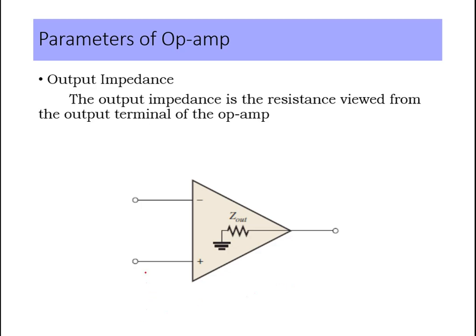Next is output impedance. Output impedance is the resistance available at the output terminal of an op-amp, denoted as Z_out. It is the resistance viewed from the output terminal, calculated between the output terminal and ground.